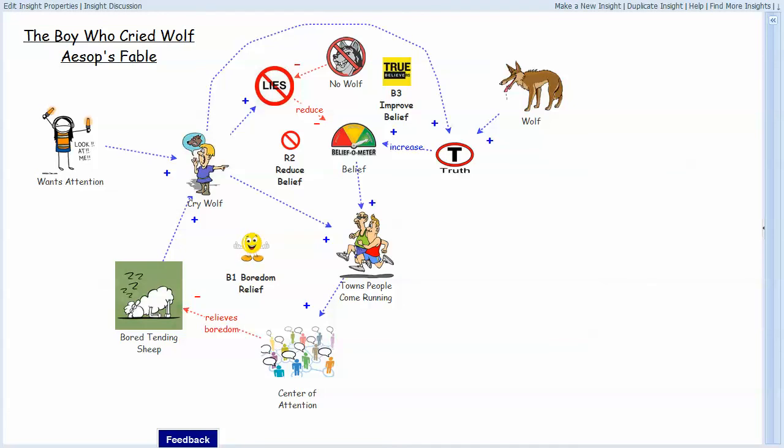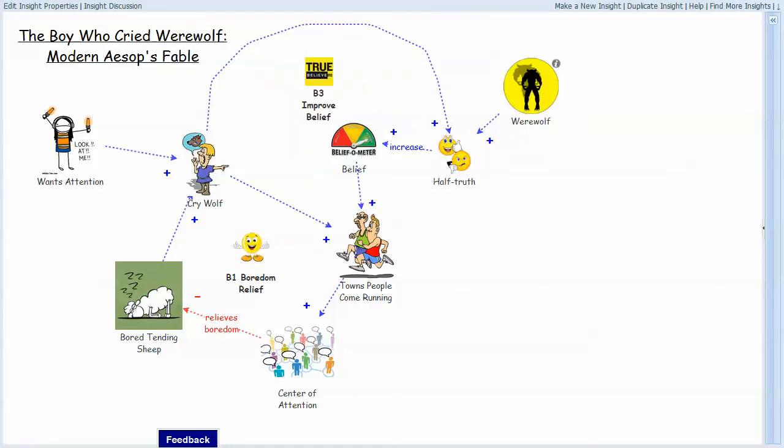And Jeff noticed that I created it and put it on InsightMaker, and he just couldn't help himself, so he had to turn it into The Boy Who Cried Werewolf. So he reworked the diagram for cry wolf with the werewolf, which is a half-truth, and the half-truth somewhat increases the belief-o-meter, so it's still an improved. And this is the kind of thing that happens when you create things in an environment where other people can actually find them and interact with them.